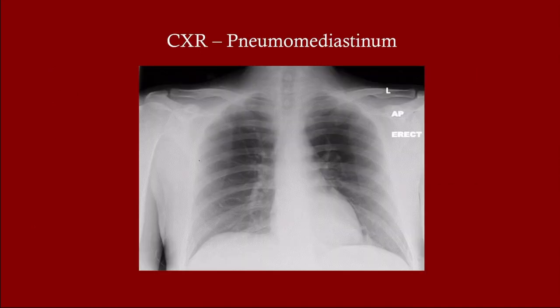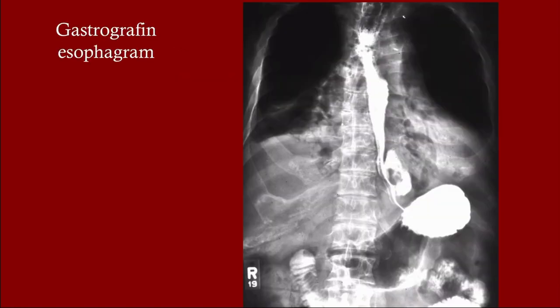Here you can see pneumomediastinum on chest X-ray — it can be subtle, but keep an eye out for it. This is the gastrografin esophagram: the patient swallows gastrografin, an X-ray is taken, and you can see the perforation clearly. With Boerhaave syndrome, the most common perforation site is within a couple of inches proximal to the lower esophageal sphincter — roughly the same area as a Mallory-Weiss tear.